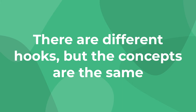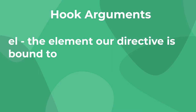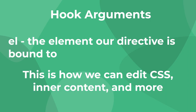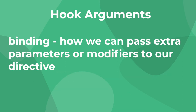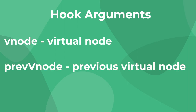Regardless of whether you're working in Vue 2 or Vue 3, when you implement these hooks they accept the same arguments: el, which is the element that this directive is bound to and gives you access to modify its CSS properties and content; binding, which is an object that contains a lot of properties that affect how our directive runs; vnode, the virtual node; and then prevvnode, which is the previous virtual node.